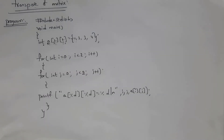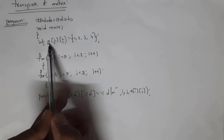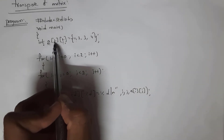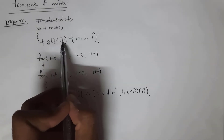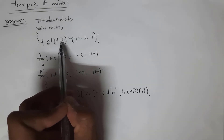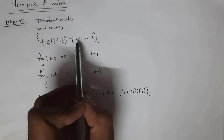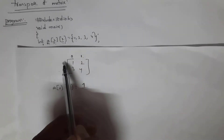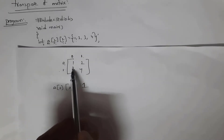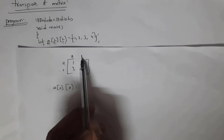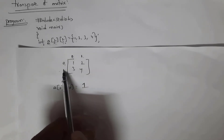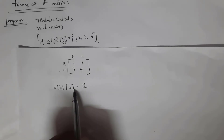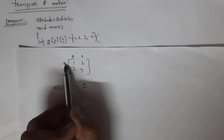I will now explain the program for transpose of a matrix. Here I written int a[2][2], where 'a' is the array name, these two represent rows and these two represent columns — two by two means I can store four elements: one, two, three, four. Index zero represents the first row and zero represents the first column; index one represents the second column and one represents the second row.